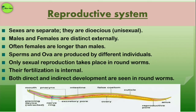In the reproductive system, the sexes are separate — they are unisexual. Males and females are distinct externally, and often males are shorter than females. Sperms and ova are produced by different individuals, so only sexual reproduction takes place. Fertilization is internal. Development may be direct or indirect — some develop through an intermediate larval stage, while in direct development the young ones resemble the adult ones.